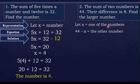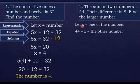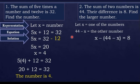Let x be one of the numbers, since there are two numbers we are looking for. The other number is 44 minus x. We get 44 minus x because the sum of the two numbers is 44, and if we subtract the first number x from 44, we get the second number. So the first number is x and the second number is 44 minus x.